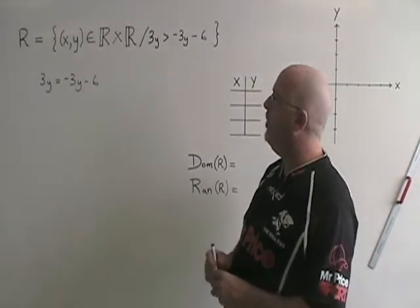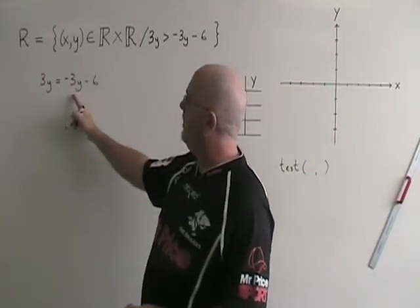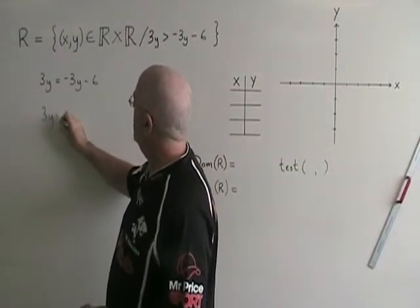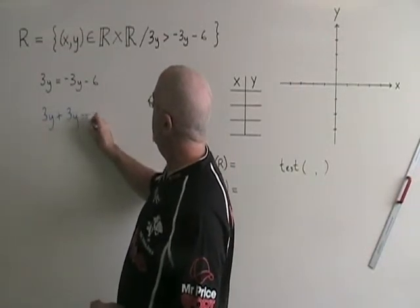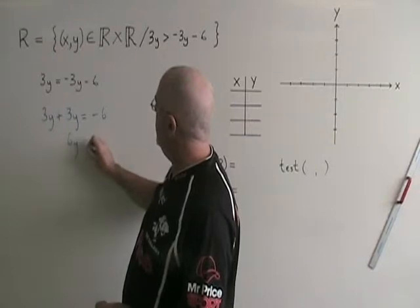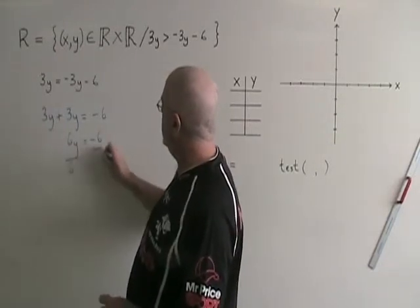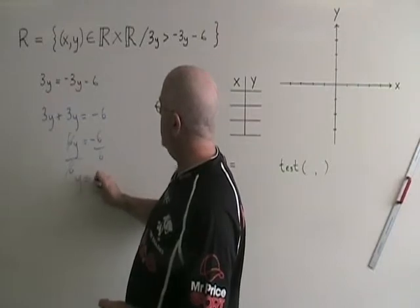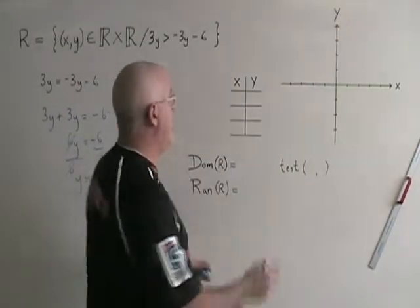I need to find the y-intercept. Moving the negative 3y to the other side of the equals, I get 3y plus 3y equals negative 6. So 6y equals negative 6, and then if I divide both sides by 6, I get y equals negative 1.